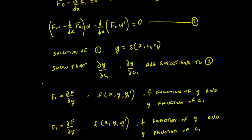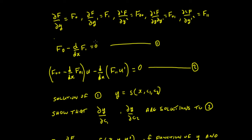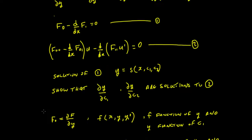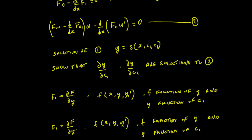So we know that if we're going to differentiate this, we'll end up with F0 and F1. Now F0 is partial f by partial y, but the function f is a function of the independent variable x, the dependent variable y, and the y-derivative. So in this instance, f is going to be a function of y, but y is also going to be a function of C1. The same thing for F1 — that's going to be a function of y and also a function of C1.